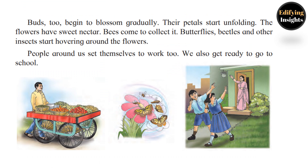Buds too begin to bloom gradually — their petals start unfolding. The flowers have sweet nectar and bees come to collect it. Butterflies, beetles, and other insects start hovering around the flowers. People around us set themselves to work too, and we also get ready to go to school.